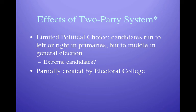The two-party system is partly created by the Electoral College. To become president, the Constitution requires a majority of electoral votes — half plus one. With three candidates, it's rare for one to get 51%, meaning the Electoral College would likely never choose the president and the House of Representatives would choose instead. So the Electoral College is partially responsible for our two-party system.